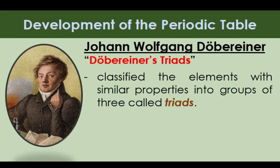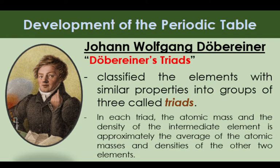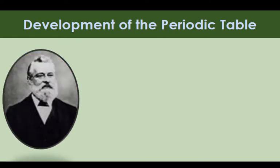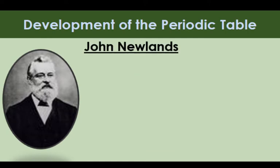He classified elements with similar properties into groups of three called triads. In each triad, he noticed that the atomic mass and density of the intermediate element is approximately the average of the atomic masses and densities of the other two elements. However, as new elements were discovered, they no longer followed these groups of three.